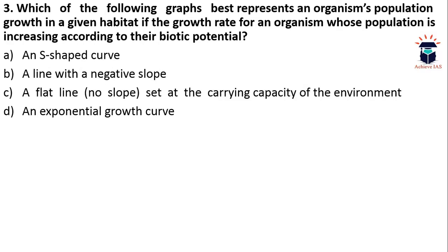The next question is: which of the following graphs best represents an organism's population growth in a given habitat if the growth rate is increasing according to biotic potential? A) An S-shaped curve; B) A line with a negative slope; C) A flat line set at the carrying capacity; D) An exponential growth curve. The answer is D — an exponential growth curve.